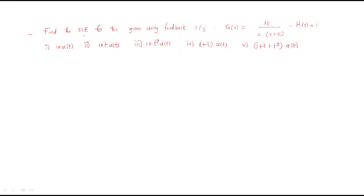In this session we will discuss the problem regarding steady-state error. The problem: find the steady-state error for the given unity feedback system where G(s) = 10 / [s(s+5)], H(s) = 1, with different inputs. First, write down the given data. The open loop transfer function G(s) = 10 / [s(s+5)].